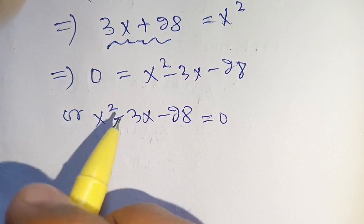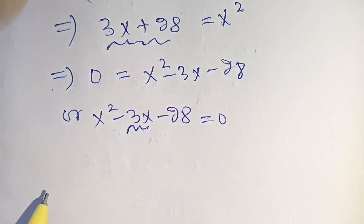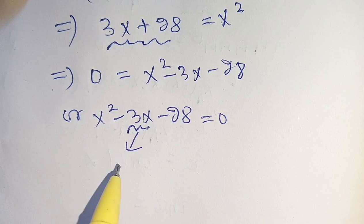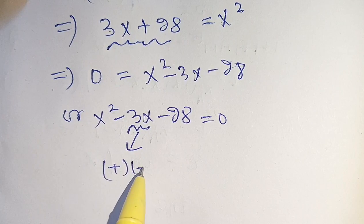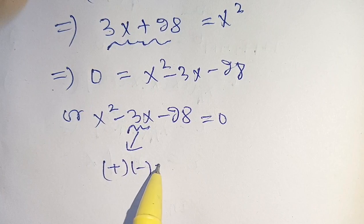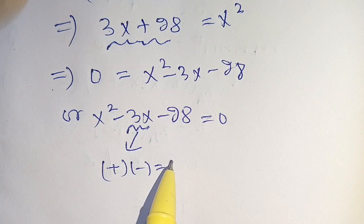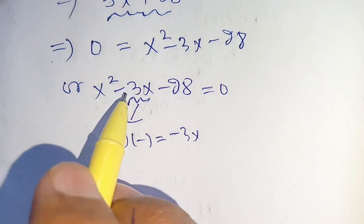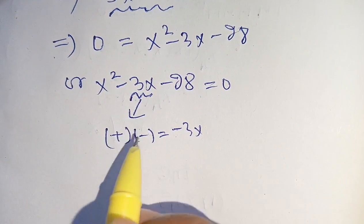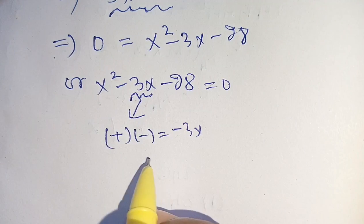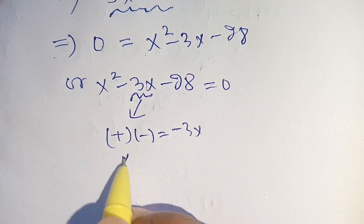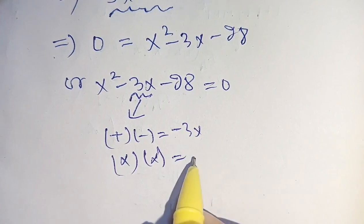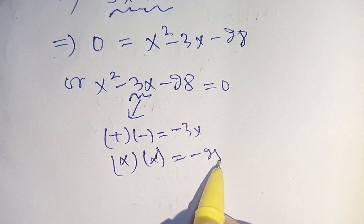In the next step we break down the middle term in such a way that when we add them they become minus 3x, and when we multiply them they become minus 28.